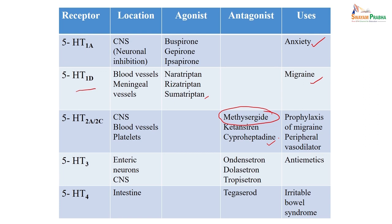Another example of 5-HT receptors — 5-HT3 is mostly located in CNS and enteric neurons. Many drugs have been developed as antagonists, such as ondansetron, which is most widely used for vomiting not controlled by metoclopramide, especially in cancer chemotherapy patients. Dolasetron and tropisetron are also examples. These are typically strong anti-emetics preferred for cancer chemotherapy-induced vomiting.